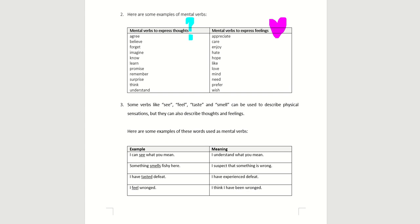'I see what you mean' — meaning I understand what you mean. 'Something smells fishy here' — in this context, it doesn't mean there's a real stench; it means I suspect something's wrong. 'I have tasted defeat' — defeat doesn't literally have a taste; it means the experience of failure. 'I feel wronged' means that I think I've been treated unfairly.